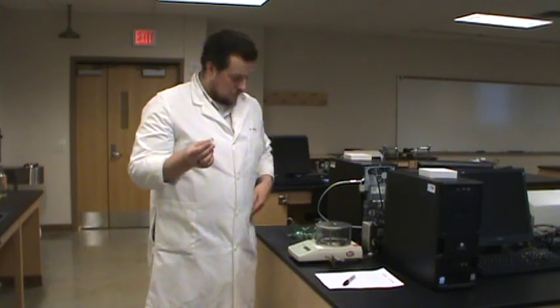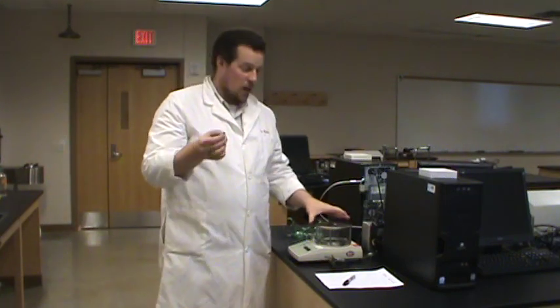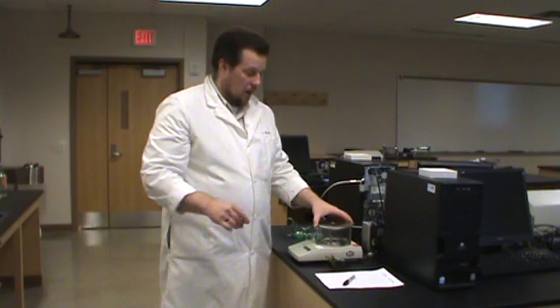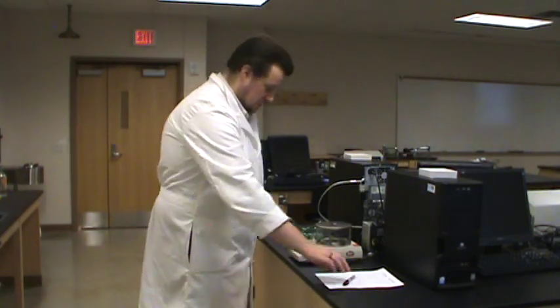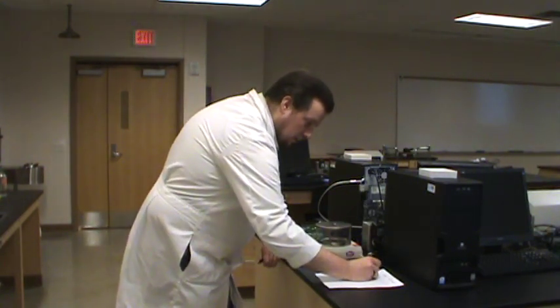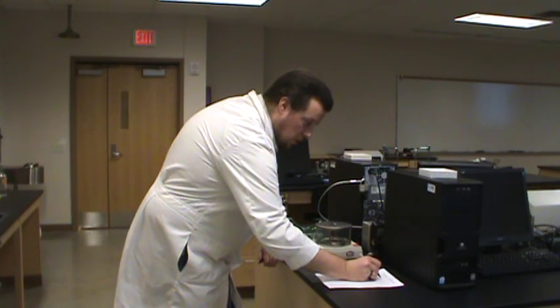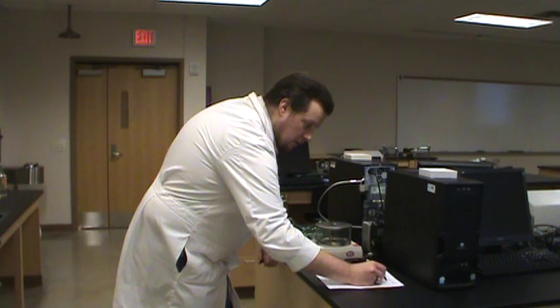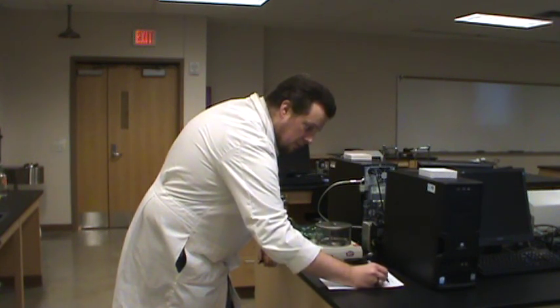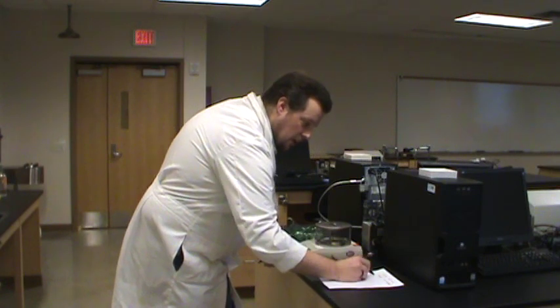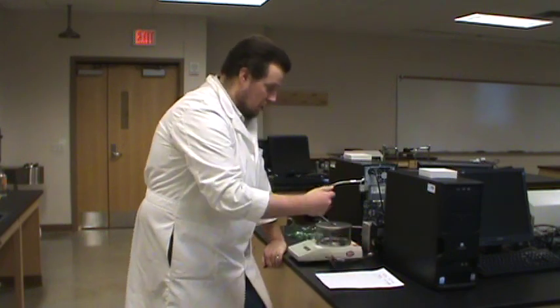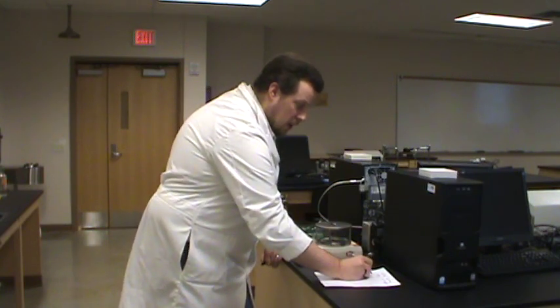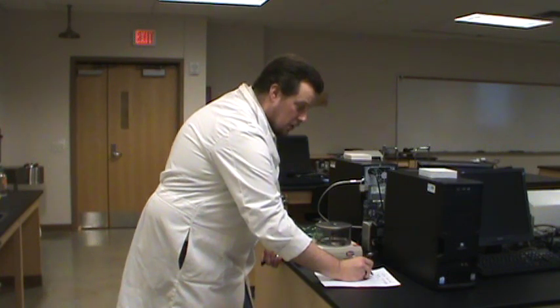Now that the ore is out of the vial, we can put the cap back on and once again record the mass of the now empty bottle: 4.463 grams, and subtract to find the mass of ore that we dumped into the beaker. So in this case I put 0.114 grams of ore in the beaker.